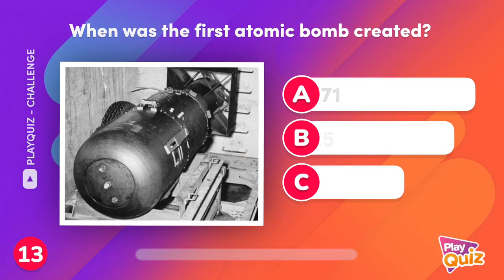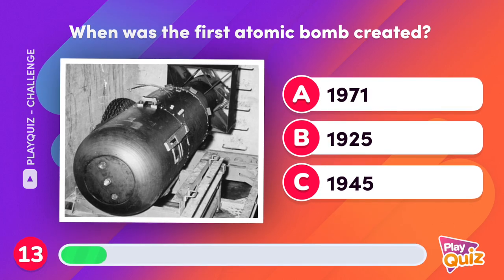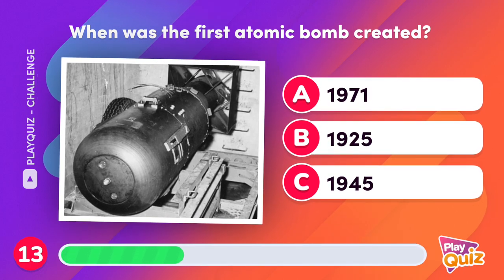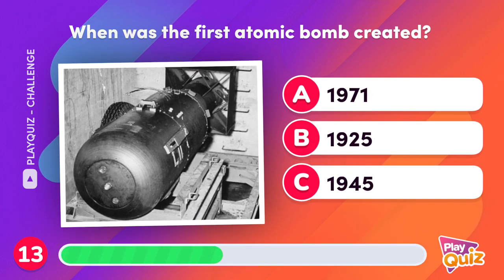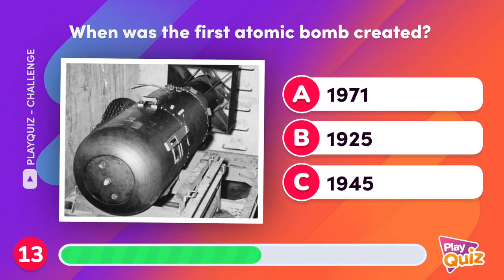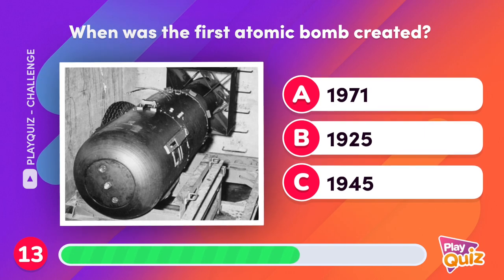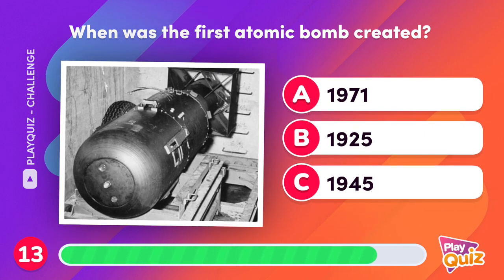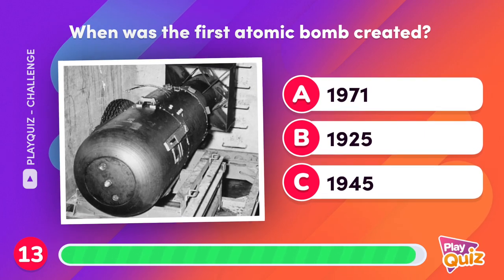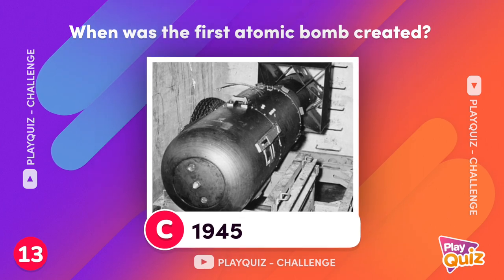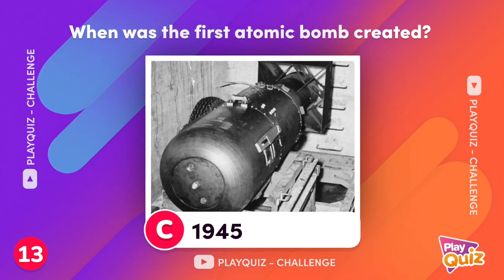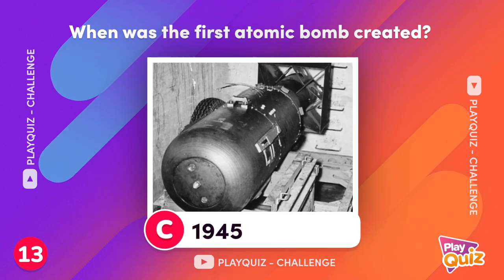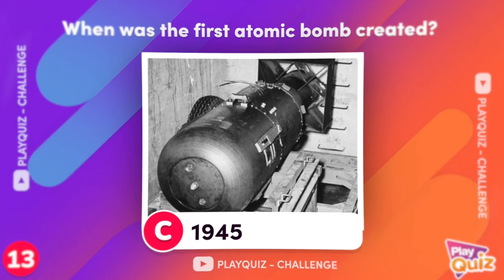When was the first atomic bomb created? In July 1945, the first atomic bombs were developed by the United States during World War II.